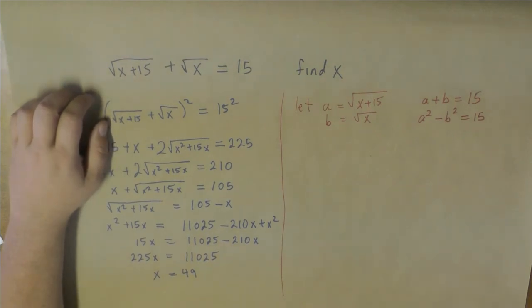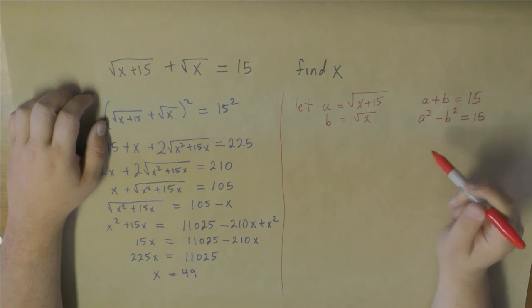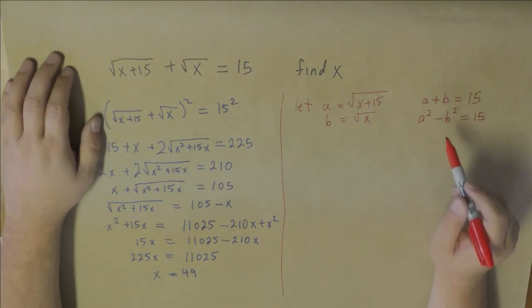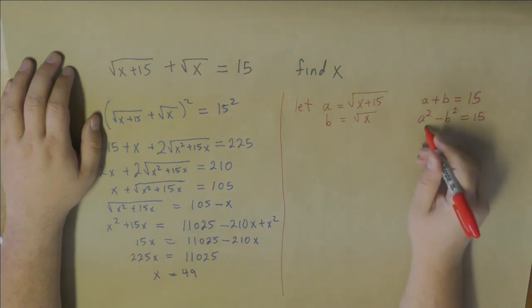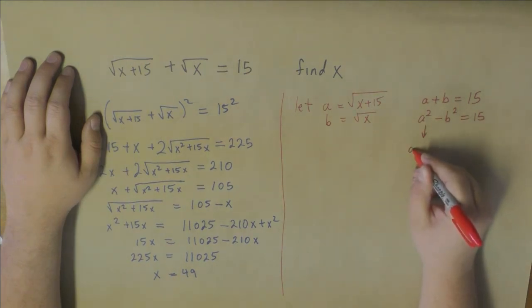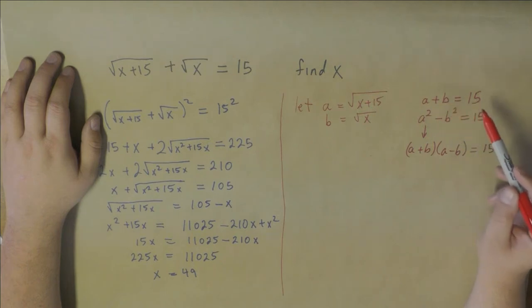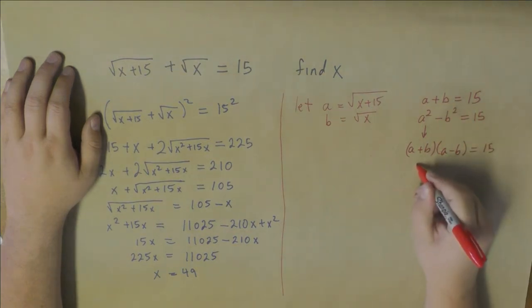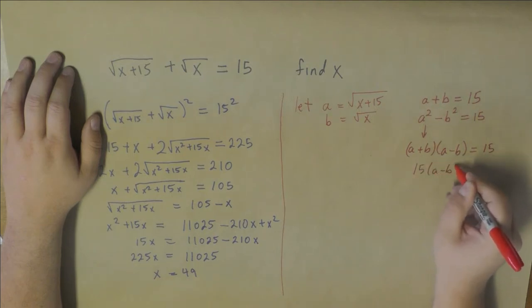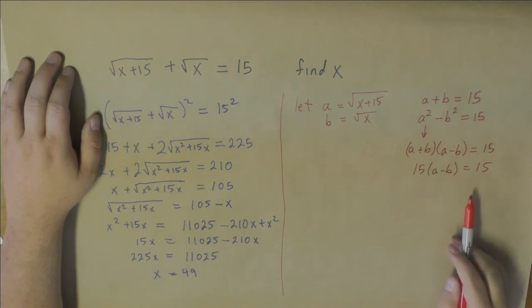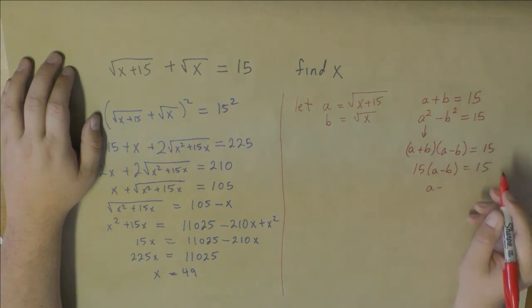Now we can actually do some work with this. Something that you might recognize is the difference of squares can be factored. So if we factor this, that becomes a plus b times a minus b, and that's going to be equal to 15. But notice that we now have a plus b is equal to 15. So we know a plus b is 15. So that gives us 15 times a minus b equals 15. And we can divide this by 15. So that means a minus b is equal to 1.